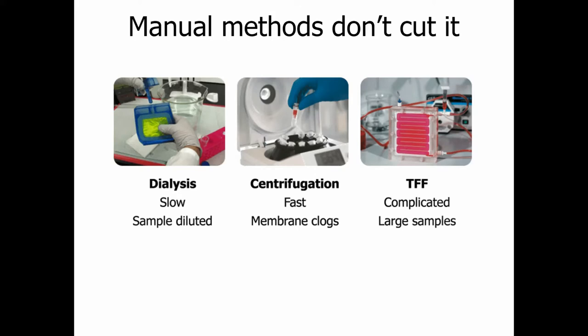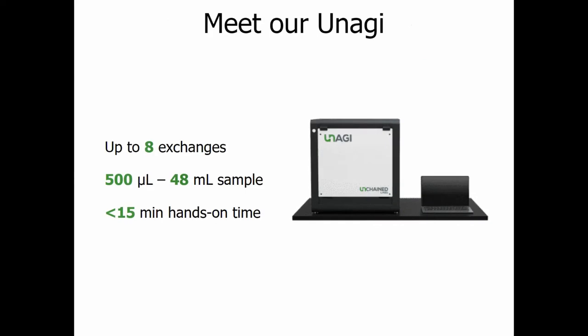So what's the alternative? What can help you power up and conquer? That would be our Unagi, which lets you do up to eight buffer exchanges and/or sample concentrations in parallel — up to eight different samples. You have a working volume range from half a mil all the way up to 48 mils of sample, and you can set all of this up in just a few minutes — definitely less than 15 minutes of hands-on time for all your runs.